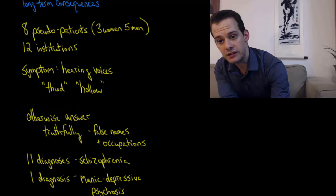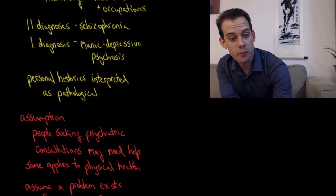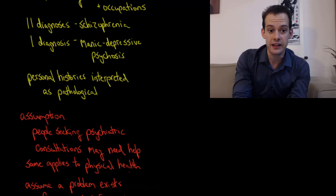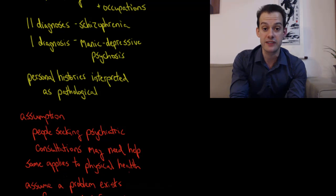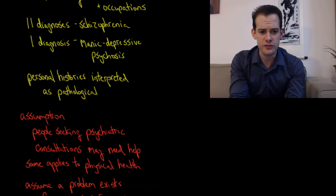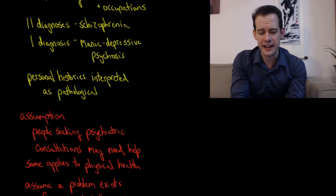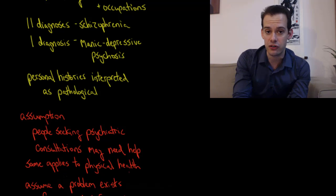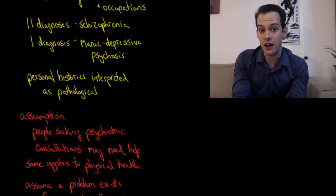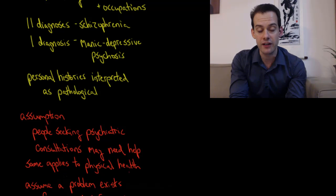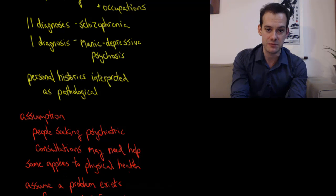Based on this consultation, in all 12 cases these pseudo patients were given diagnoses of a mental illness. In 11 cases the diagnosis was schizophrenia and in one case there was a diagnosis of manic depressive psychosis. It's worth noting that the psychiatrists often interpreted these personal histories as pathological even though in real life these personal histories had not led to mental illness. These were pseudo patients who weren't actually suffering from psychological disorder.